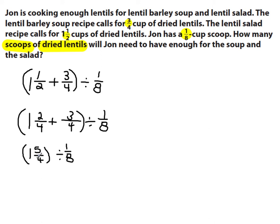I'll convert the mixed number to an improper fraction. I multiply four times one to get four, then add five, giving me nine over four. So nine-fourths represents the total amount of lentils needed. I'm dividing that by one-eighth, where one-eighth represents the size of the scoop, because I need to find how many scoops of lentils are needed.